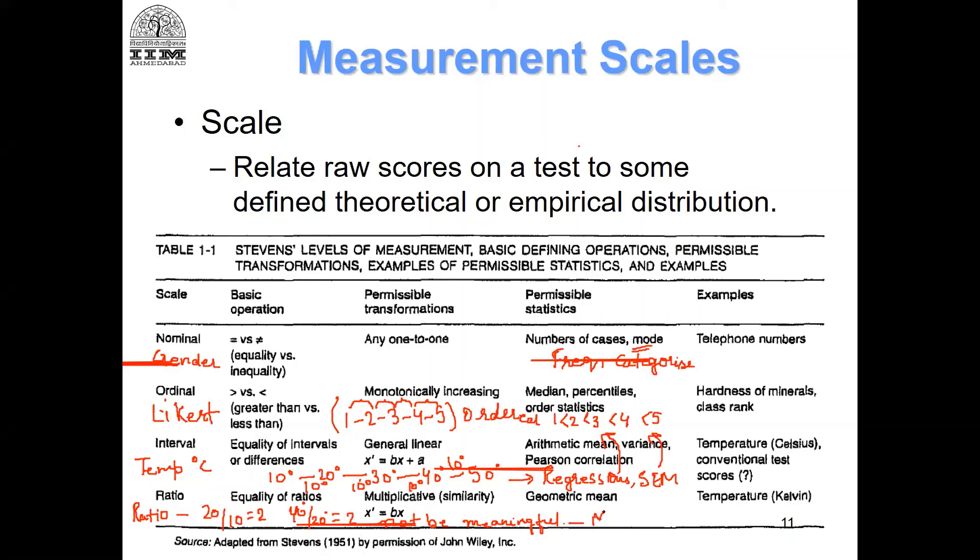To take ratios, you should have a meaningful zero. A good example of this is ratio scales like length and weight.